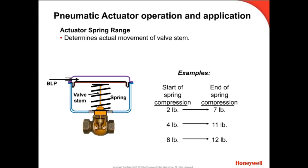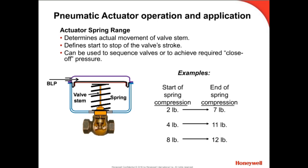Pneumatic actuators will always have a listed spring range. The spring range determines the pressure change required for full movement or stroke of the actuator from open to closed or closed to open. As an example, if this valve has a 4 to 11 spring range, then at 4 pounds the valve is full open. As the branch line pressure is increased, the valve moves towards the closed position, and at 11 pounds the valve will be fully closed. Thus, the spring range of a valve defines the start and stop of the valve stroke.